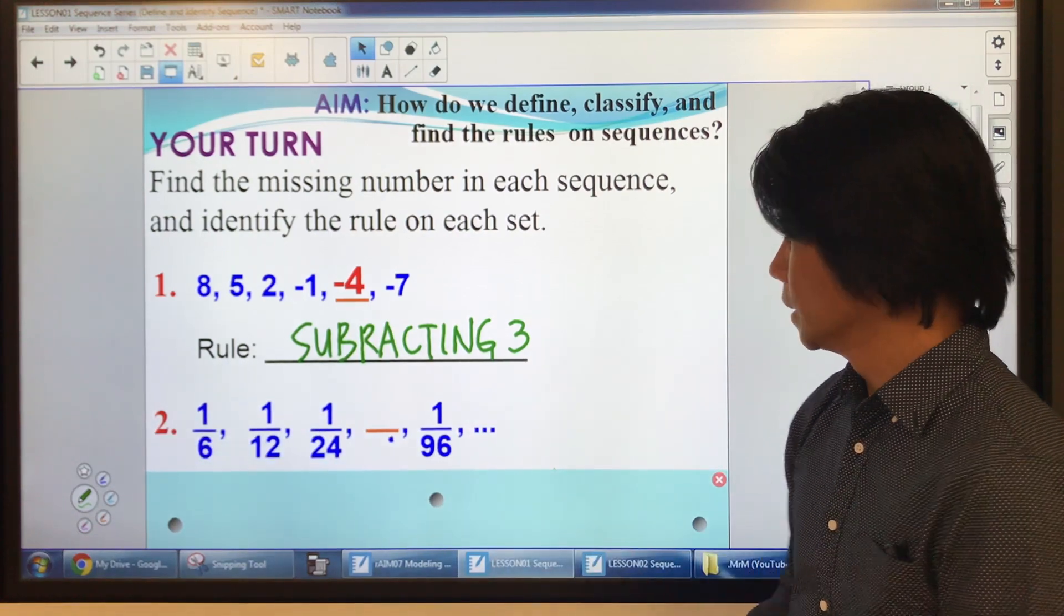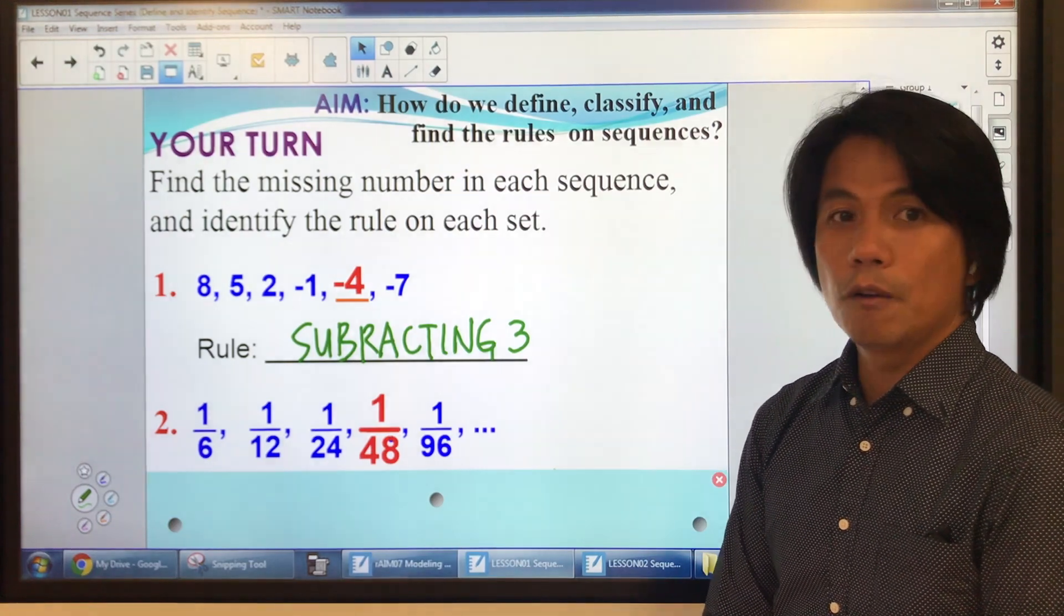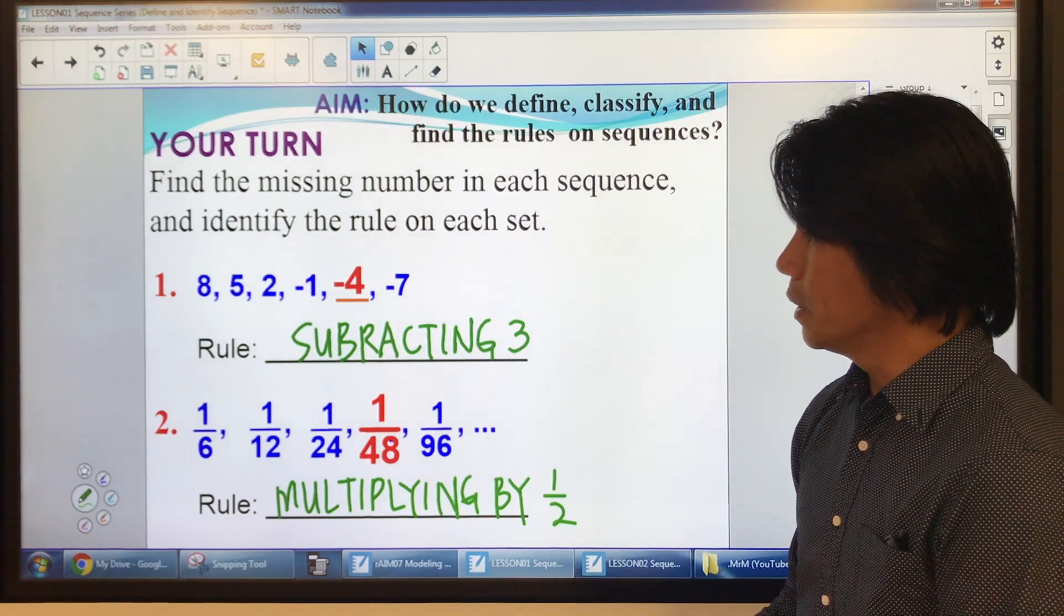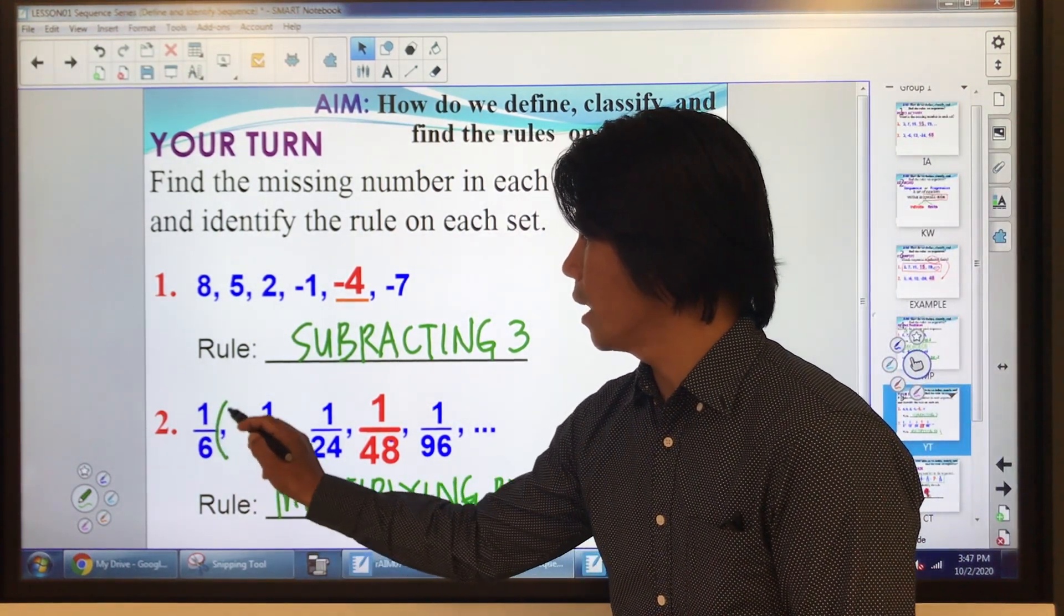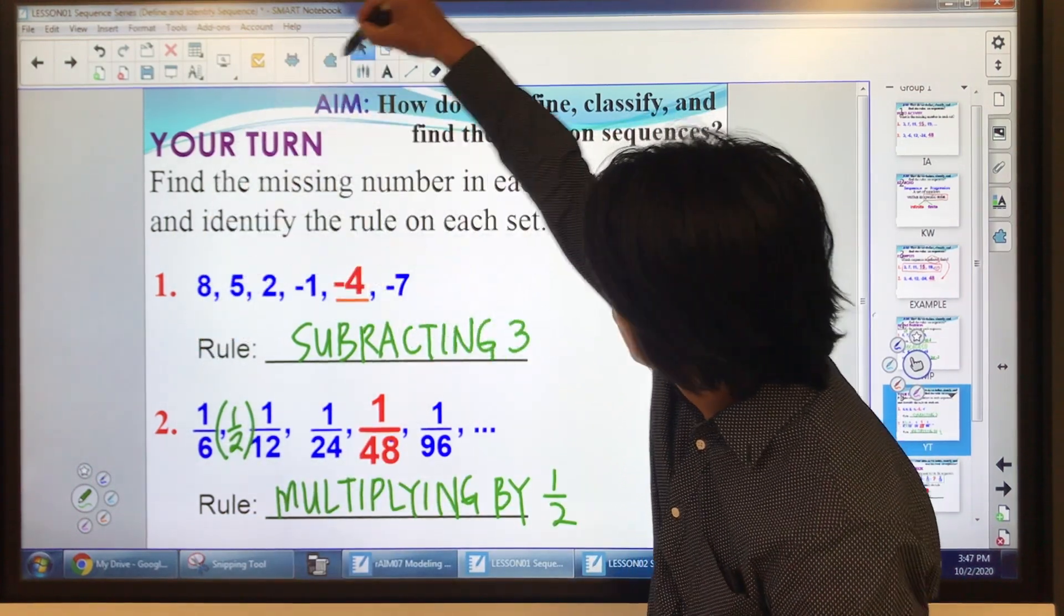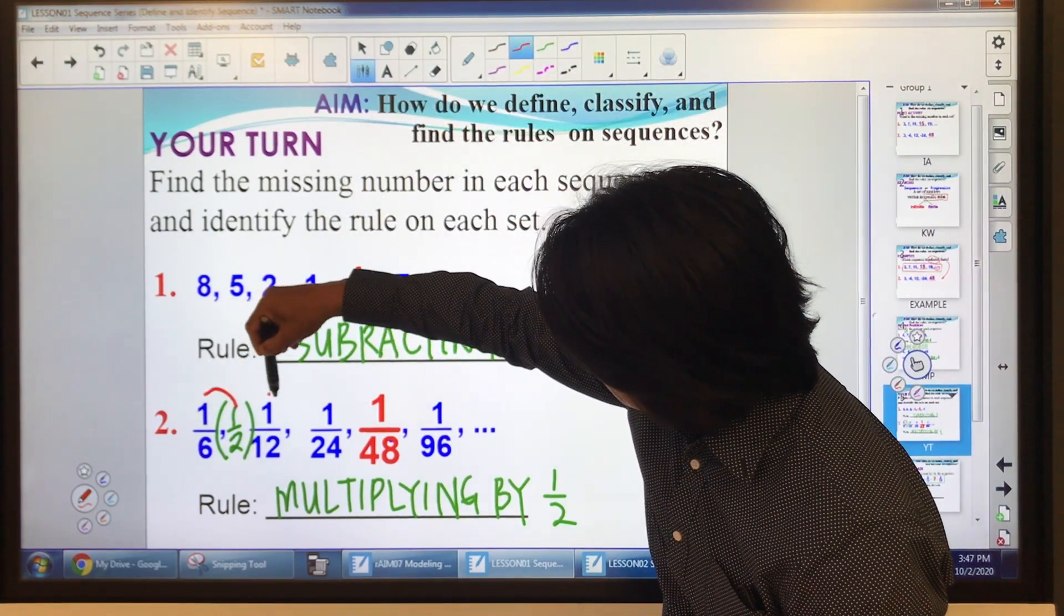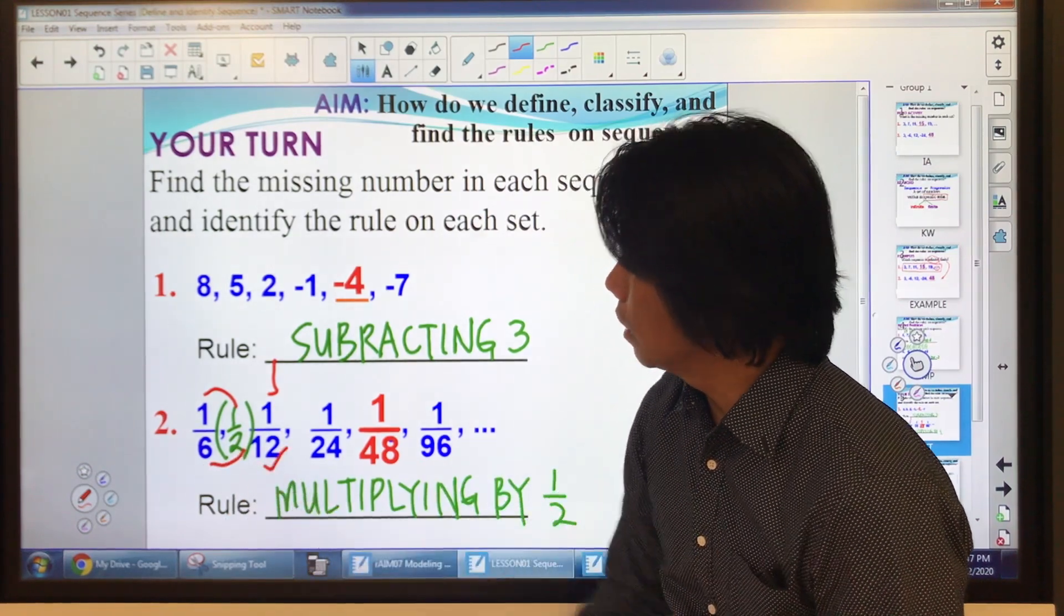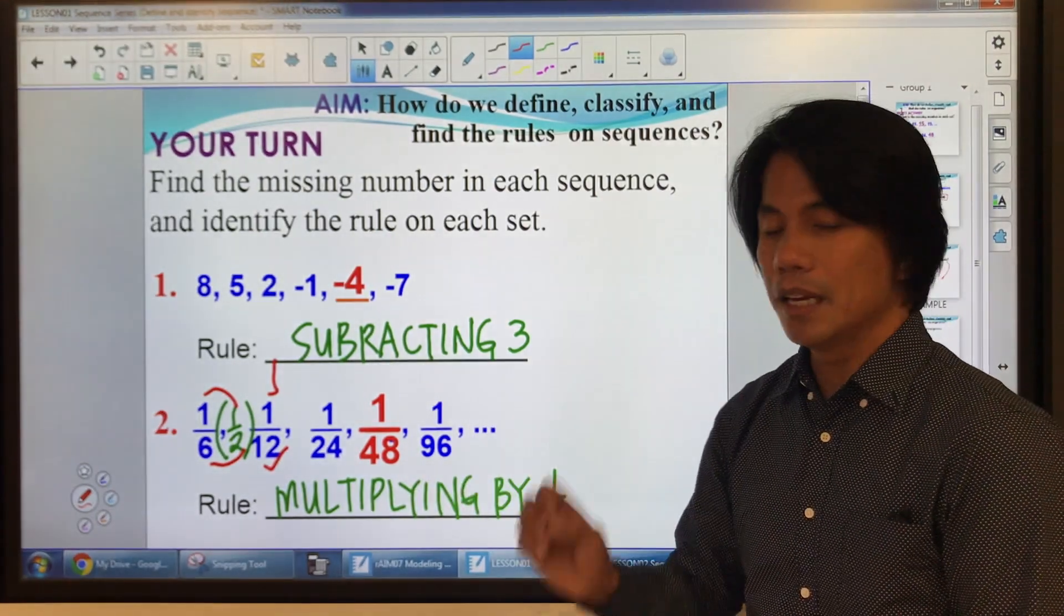How about this? What is the missing number? One over 48. And what's the rule? Multiplying by one half. So one over six times one half. So you multiply the numerators. One times one, that's one. Six times two, that's twelve. And you keep on going. And this is an infinite sequence.